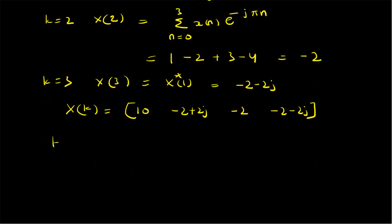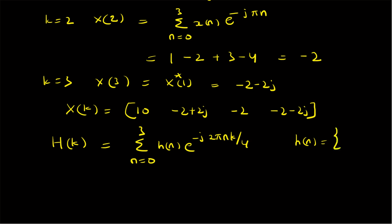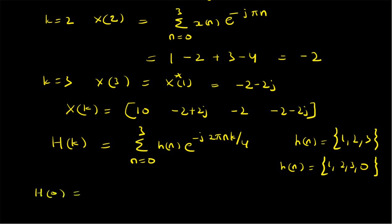Similarly, we find H[k], the DFT of h[n]. Note that h[n] is originally {1, 2, 3}, so for the circular convolution we zero-pad it to {1, 2, 3, 0} to get a four-point sequence. Then H[0] = 1+2+3 = 6.